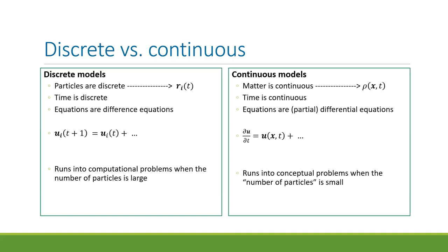So if you're talking about flocks of 10 birds, the continuous model is not going to be good because it fundamentally doesn't satisfy the assumption that the number of particles is very large — in that case you want the discrete model. On the other hand, if you want to describe 10,000 fish swimming in a tank, the discrete model could do it in principle but it's computationally difficult, and that's when you want to use a continuous model.